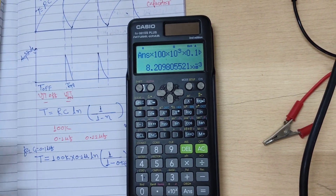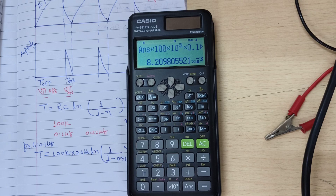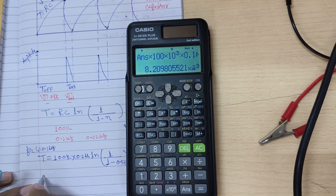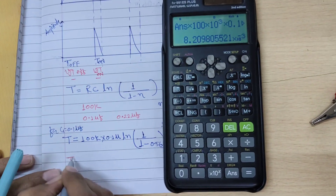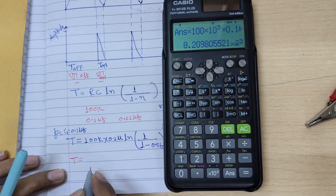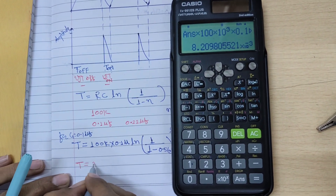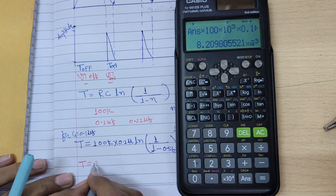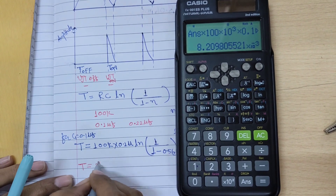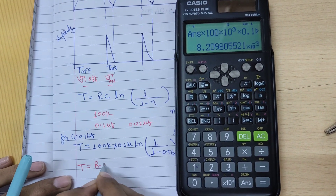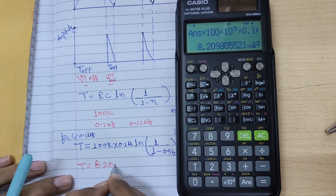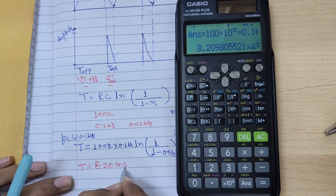This gives us the time for a capacitor of value 0.1 micro farad. The result is 8.20 milliseconds.